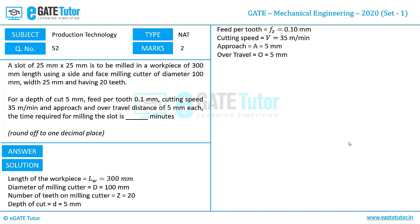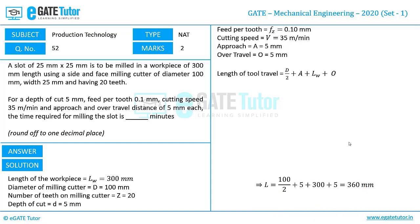Considering all these parameters, we can write the length of tool travel as the radius of the milling cutter plus approach plus length of workpiece plus over-travel distance. Substituting all the known values gives us the length of tool travel as 360 mm.